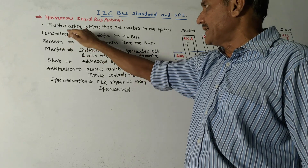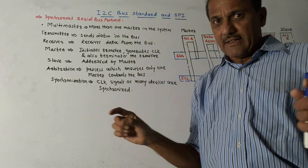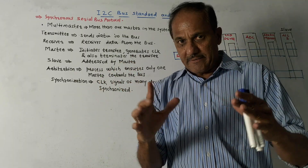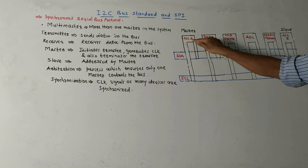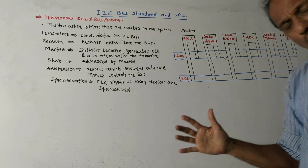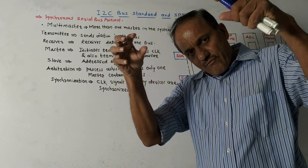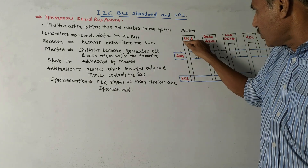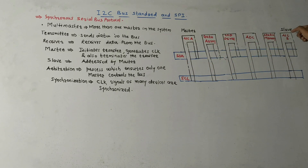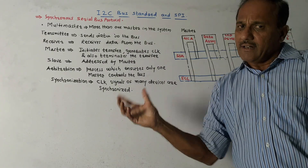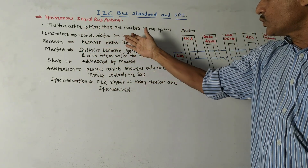Different terminologies are used in case of I2C bus standards. First is multi-master, which is the major characteristic of this bus standard — that means many master devices can be connected. For example, here I have shown two microcontrollers, microcontroller A and microcontroller B. If we want to transfer data from microcontroller A to microcontroller B, everything will be controlled by microcontroller A, so microcontroller A will be the master device. Transmitter is simply the device which sends data to the bus.